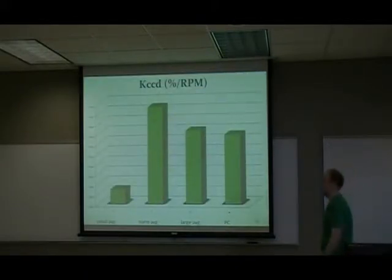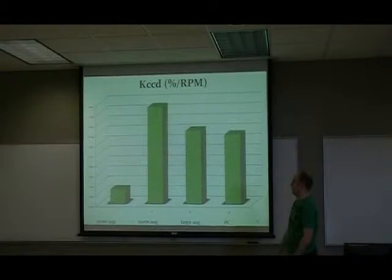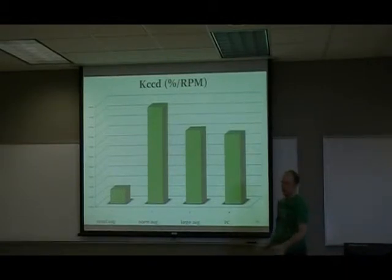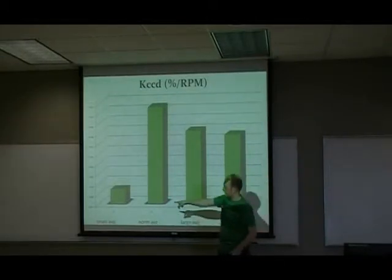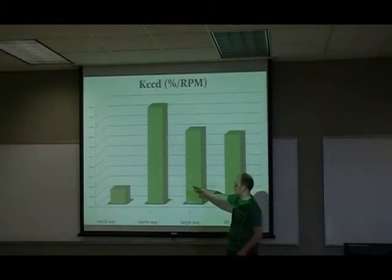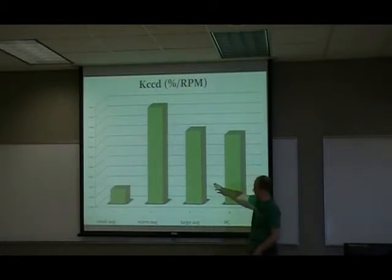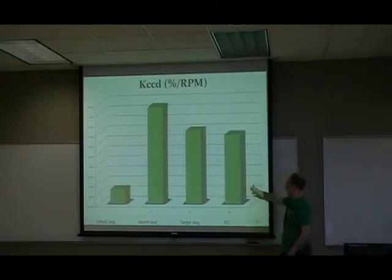This is a bar graph showing the KC critical damp averages for each value of tau. This is the small tau average compared to the normal tau average, compared to the large average, compared to the proportional controller.